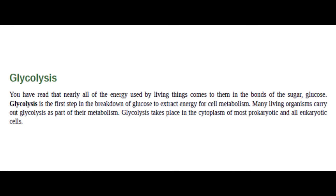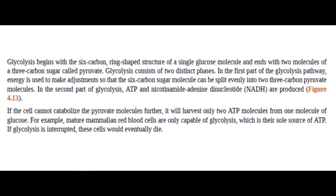Glycolysis. You have read that nearly all of the energy used by living things comes to them in the bonds of the sugar glucose. Glycolysis is the first step in the breakdown of glucose to extract energy for cell metabolism. Many living organisms carry out glycolysis as part of their metabolism. Glycolysis takes place in the cytoplasm of most prokaryotic and all eukaryotic cells. Glycolysis begins with the 6-carbon ring-shaped structure of a single glucose molecule and ends with two molecules of a 3-carbon sugar called pyruvate.